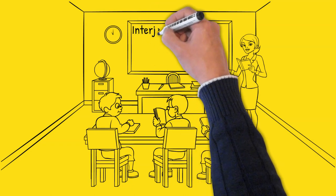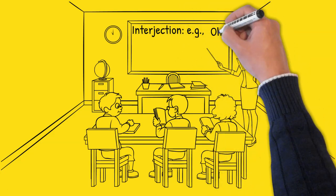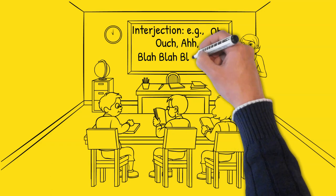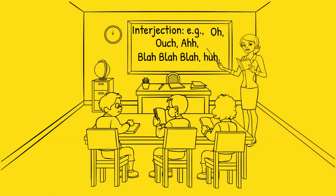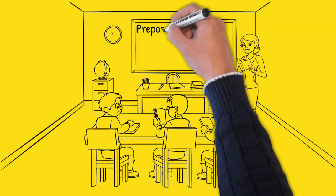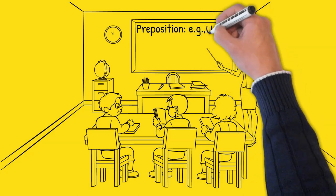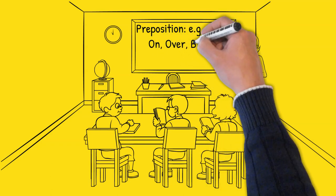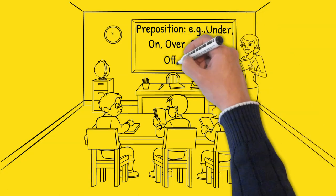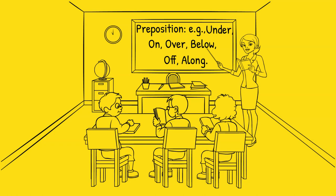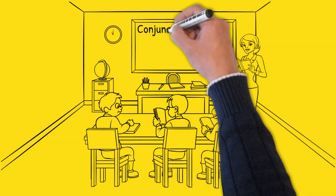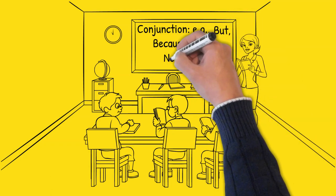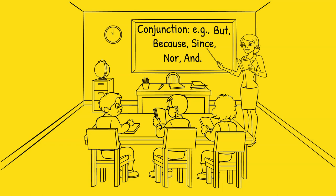Number five: interjection — it expresses emotion. Examples include oh, ouch, ah, hmm, and so forth. Number six: preposition — it shows the relationships between nouns and pronouns. Examples include under, on, over, below, off, along, and so on. Number seven: conjunction — it connects words in a sentence. For example, but, because, since, now, and, and so forth.